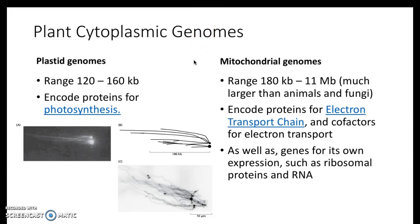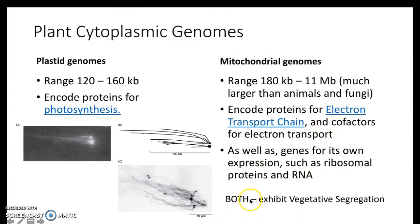We'll revisit genomes in light of the number of genomes, but for right now we'll figure a single genome. In plants you can have a number of different genomes. Something I've added here in the lower left: both mitochondrial genomes and plastid genomes exhibit vegetative segregation. Those of you in horticulture have probably heard reference to variegated plants. We'll talk about that and how it happens with leaves.